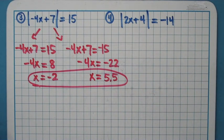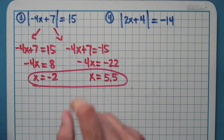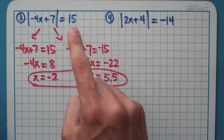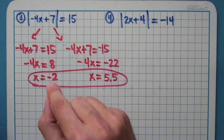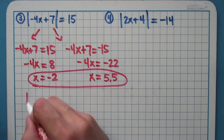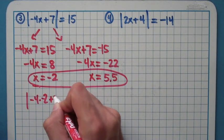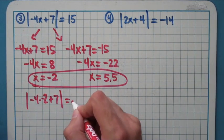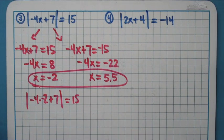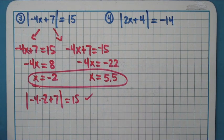You might be asking: wait, I thought absolute values couldn't be negative, but I got a negative answer. Answers are fine to be negative — it's just the absolute value itself that needs to equal a positive. If you plug negative 2 in, you get the absolute value of negative 4 times negative 2 plus 7, which equals the absolute value of 8 plus 7, which is 15. It worked out. You can check the other solution as well.